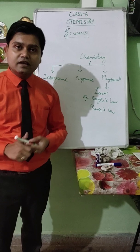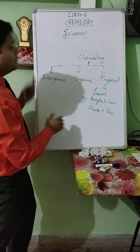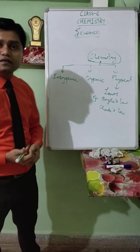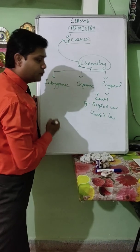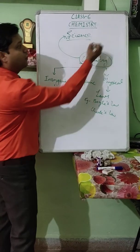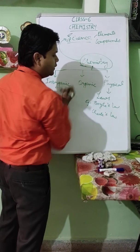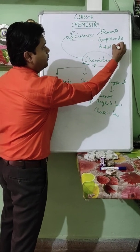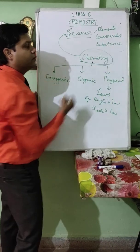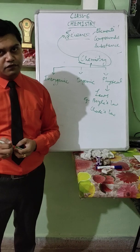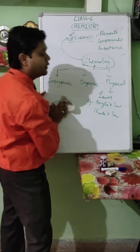We are starting from the basics so that from Class 6 onwards your foundation may be strong. Now let us define Chemistry. Chemistry is the branch of Science which deals with the study of different types of elements, compounds, and substances — their nature, their properties, and their chemical behaviour. That branch of Science is known as Chemistry.